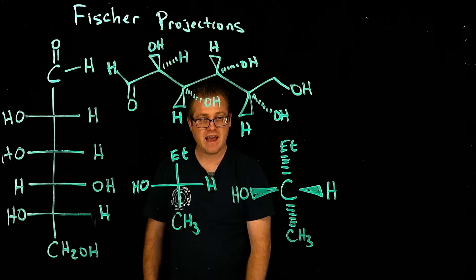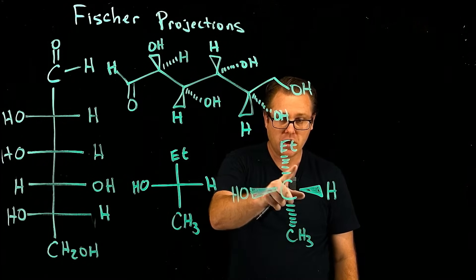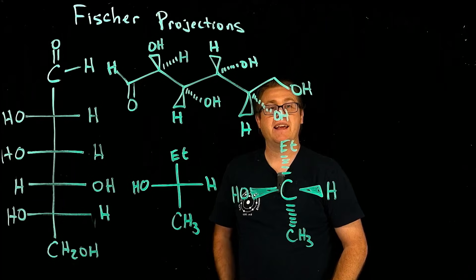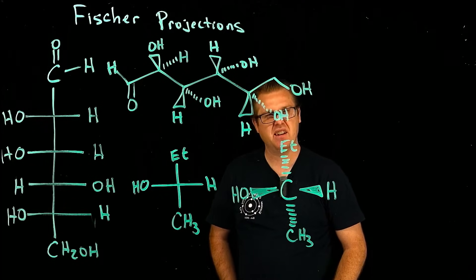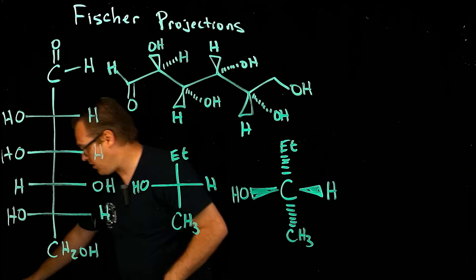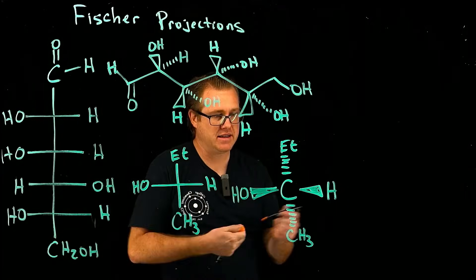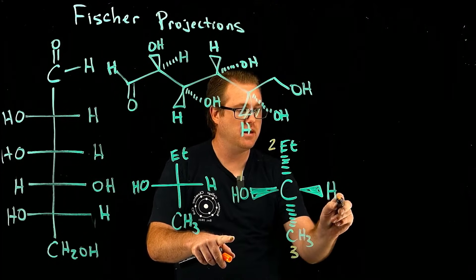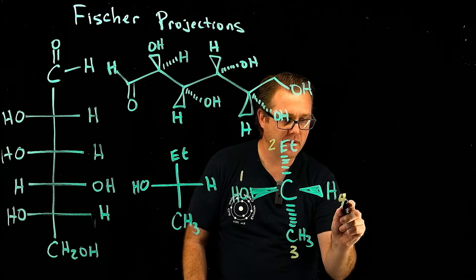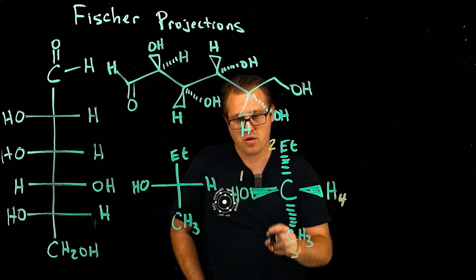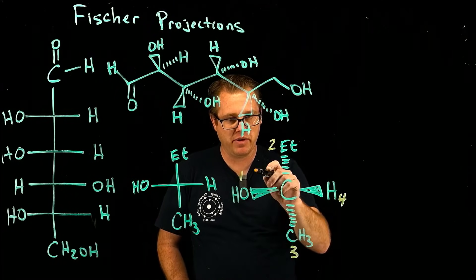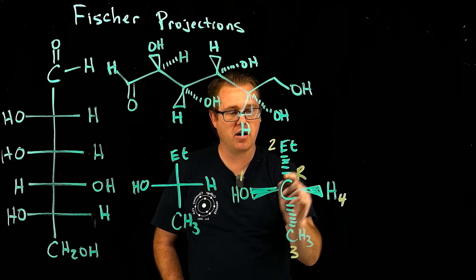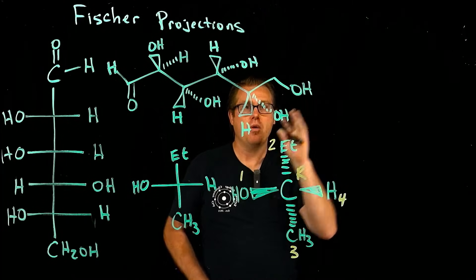That information is super important — you have to remember that horizontal lines are wedges. Why is that so important? Because when we look at this molecule and ask what the configuration is — R or S — we prioritize the groups: priority one, two, three, and four. Going one, two, three, we're going clockwise, so that would be R.